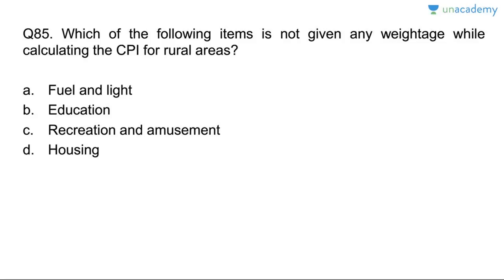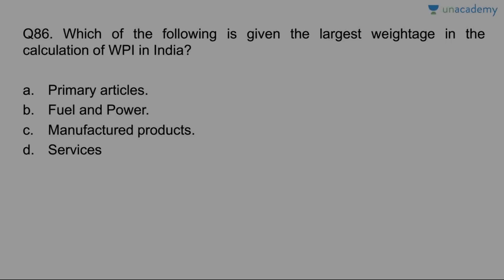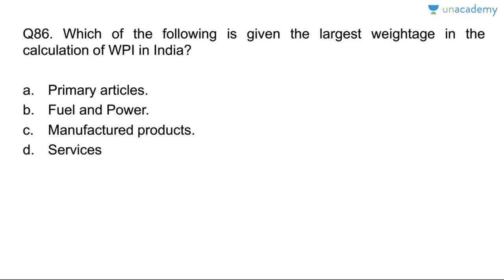Question eighty-five: which item is not given any weightage while calculating CPI for rural areas? Housing. Fuel and light, education, and recreation and amusement are given weightage for rural areas, but housing is not. Answer is D. Question eighty-six: which item is given the largest weightage in calculation of WPI in India? Manufactured products are given the largest weightage in WPI. Answer is C.